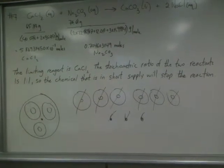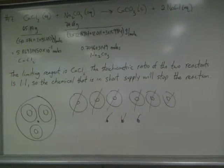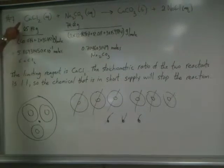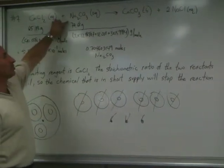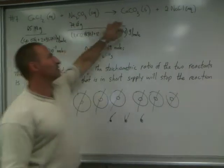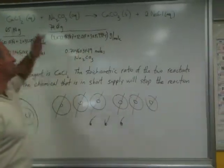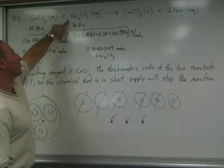So you have to keep track of the stoichiometry when you're doing a limiting reagent reaction. In this case, though, the stoichiometry of this reaction is one to one. You have calcium chloride reacting with sodium carbonate to form calcium carbonate and sodium chloride. The stoichiometry between calcium chloride and sodium carbonate is one to one.